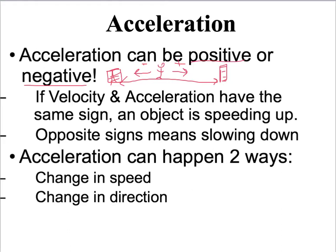We won't get too complex with this in our class, but if velocity and acceleration have the same sign, that means they're going the same way and the object is speeding up — it's increasing its velocity. If they have opposite signs, the acceleration and velocity, that means the object is slowing down. An object can change its acceleration in two ways: it can change its speed, and it can change its direction.